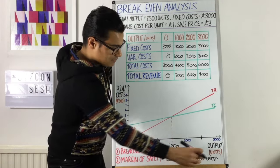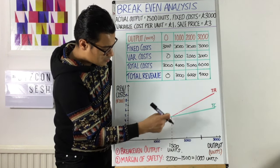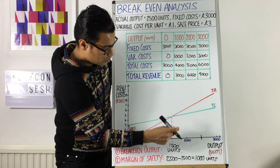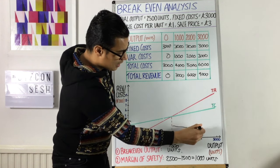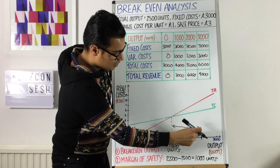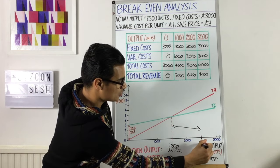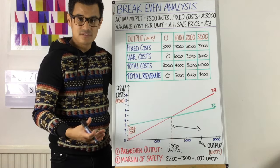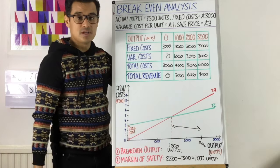So your margin of safety is 1,000 units, because it suggests that your breakeven point is where these two lines cross, the total cost and total revenue cross, which is here. And it's the difference between that and here, which is 2,500 units, which is your actual output, 2,500 units, your actual output. And this difference, that is the margin of safety. And if we put that in numbers, that's 1,000 units.